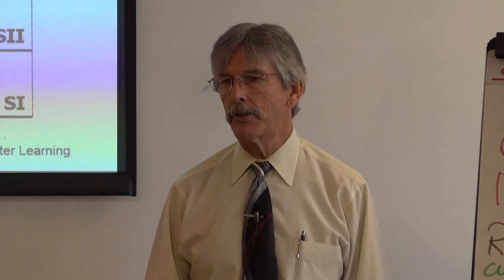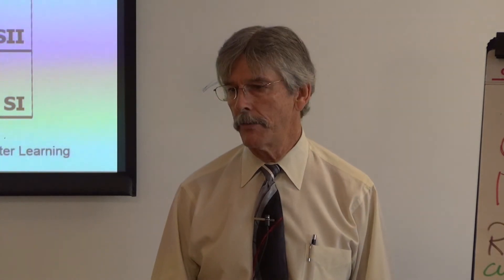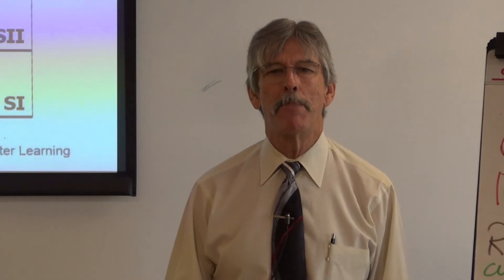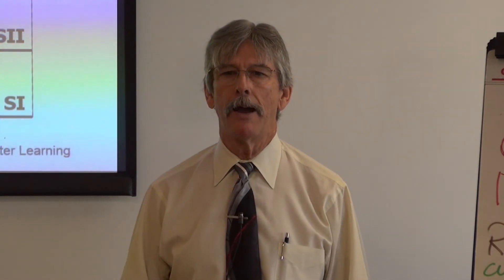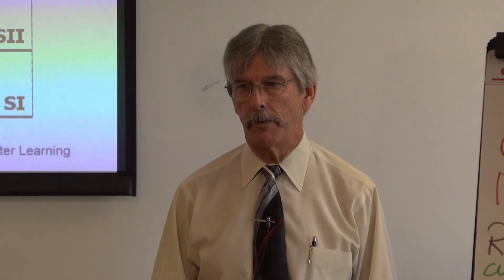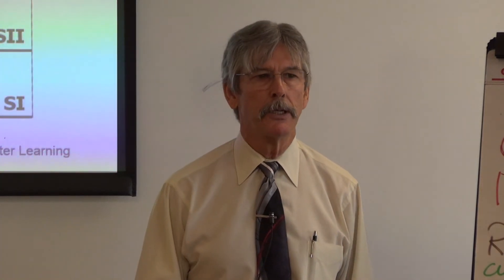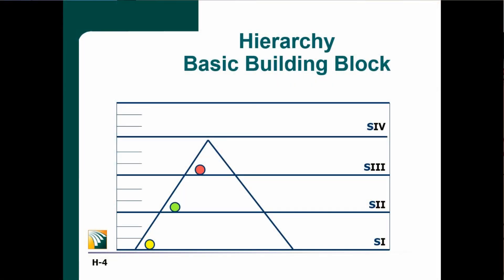Now what we've been talking about so far are the bottom three layers in the organization. Elliot describes these bottom three layers as the basic building block. No matter how large your organization gets — 300 people, 500 people, 1,000 people, 3,000 people — it's going to be populated by these basic building blocks all over the place. But here's an interesting question: what's the focus of this basic building block — internal or external? We have people who are doing production, people who are making sure production gets done inside of a system in which production is done. What's the focus — internal or external? Very much an internal focus.